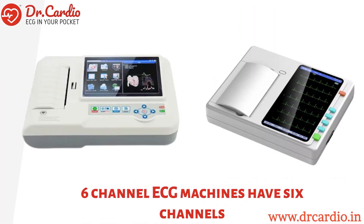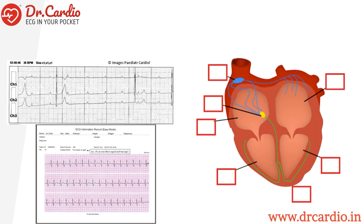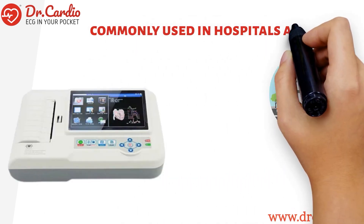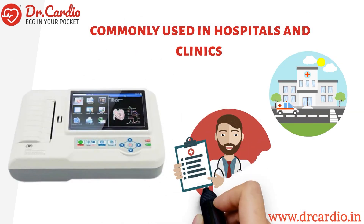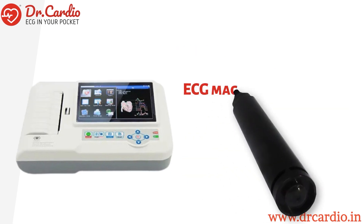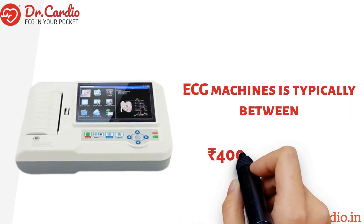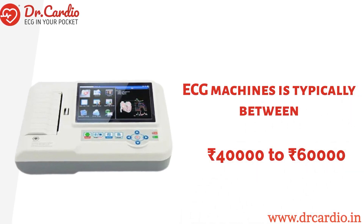6 channel ECG machines have 6 channels for recording the electrical activity of the heart, which means that 6 leads can be recorded at the same time. These machines are commonly used in hospitals and clinics for more detailed cardiac evaluations. The price range for 6 channel ECG machines is typically between Rs 40,000 to Rs 60,000.